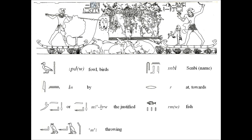Finally, stt is the word for spearing, which you can also see above the inscription, surrounded in blue. This is how you read inscriptions on monuments. This is a more difficult type of reading, but as we go along in the lessons you'll be able to familiarize yourself more with this type of writing. It eventually becomes easier as the lessons progress.